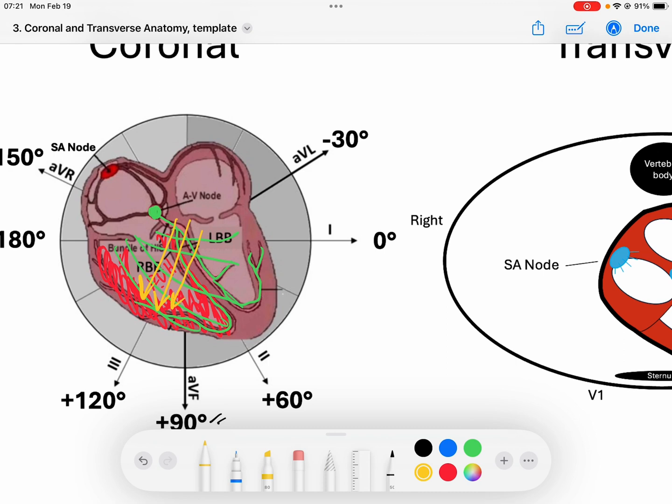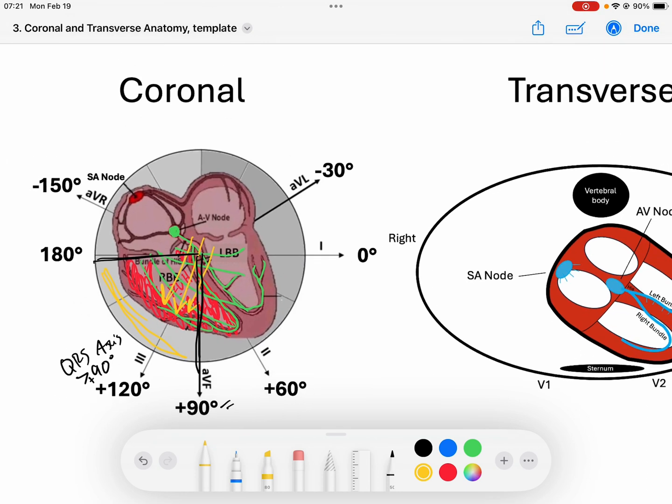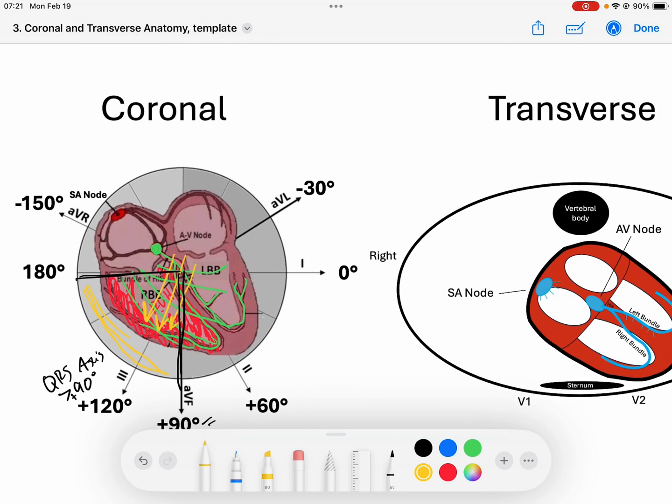Our QRS axis in a patient with right ventricular hypertrophy will fall in this quadrant. It will be greater than positive 90 degrees in this region because my right ventricle is drawing those QRS forces that direction.